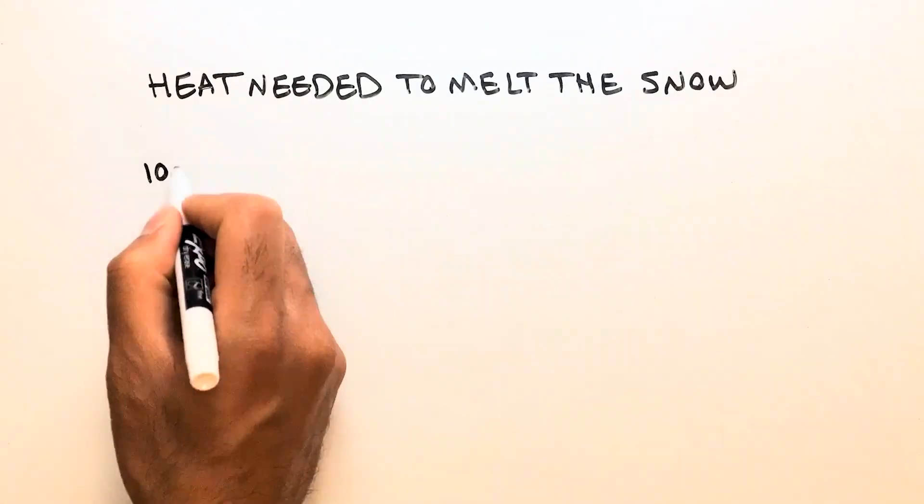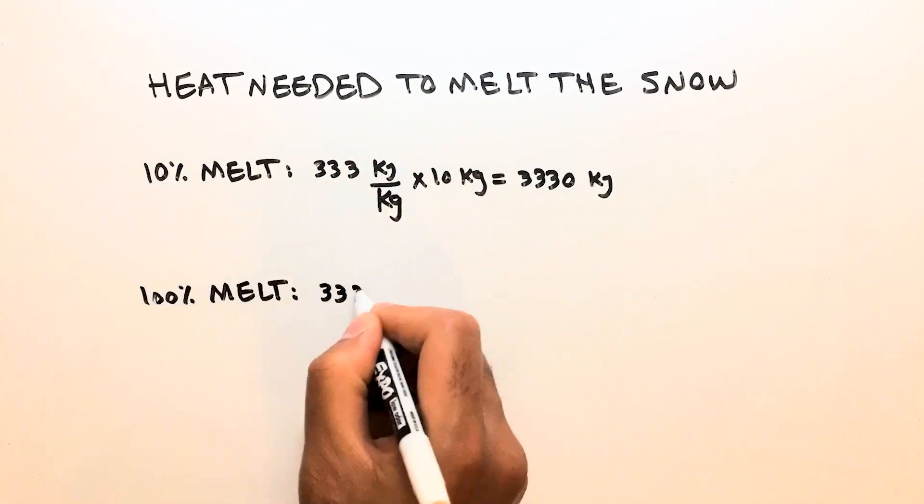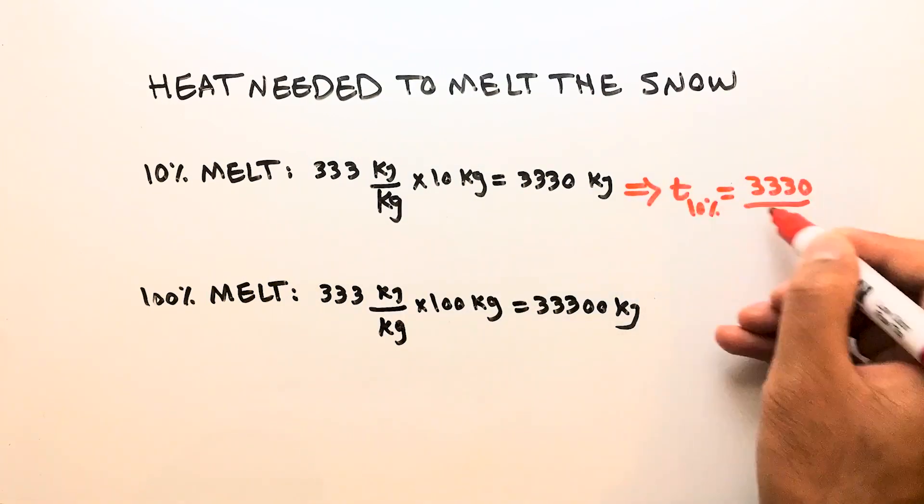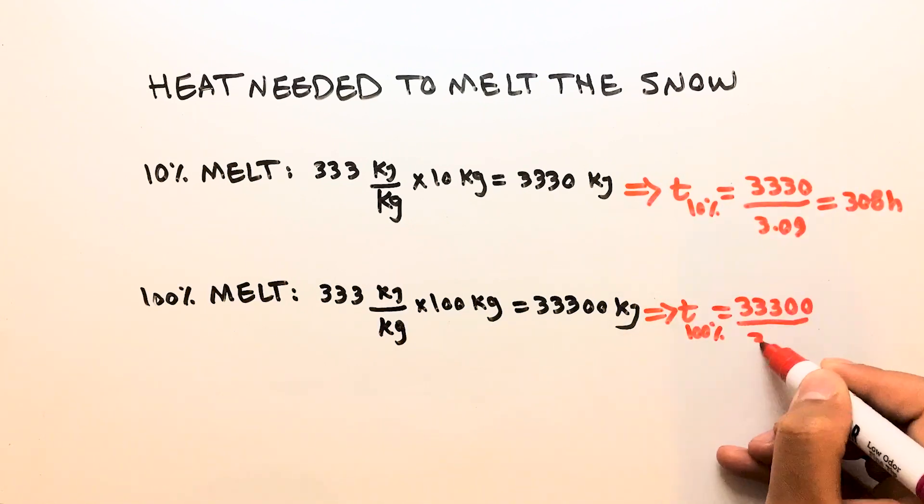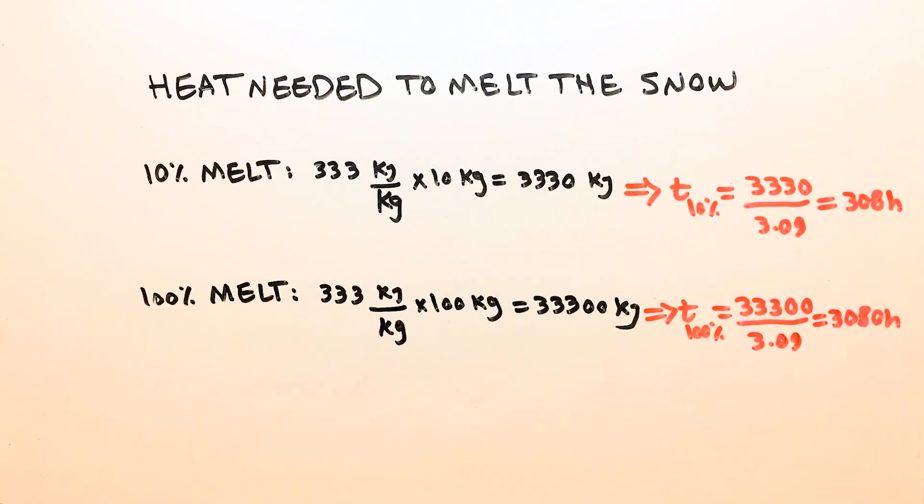If the heat passing through the insulation covering is only used to melt the snow, it would take about 308 hours to melt 10% of the snowball and about 3080 hours to melt all of it.